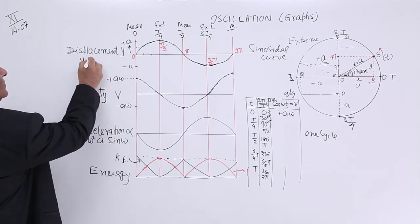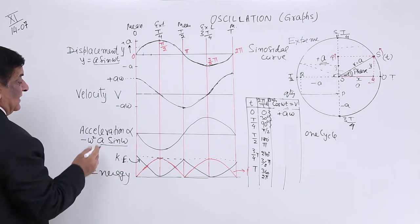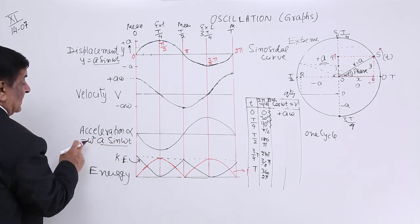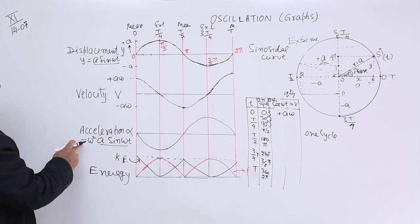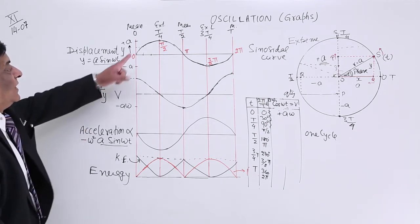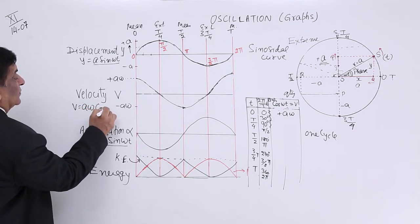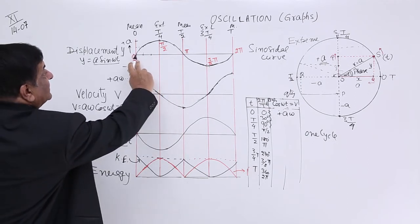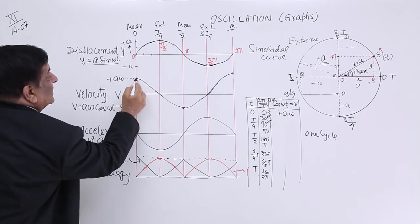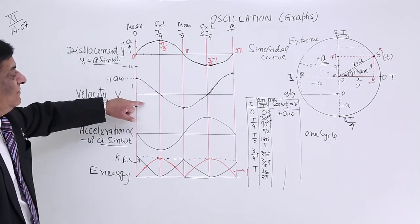Acceleration alpha equals minus omega square A sine omega t, while y equals A sine omega t. This is multiplied by omega square and the sign is negative. Negative means when t is changing, it is going to negative value first. So for the first, it goes negative; for displacement, it goes positive. This is velocity v equals A omega cos omega t. This is the cos graph. This is sine graph, this is cos graph. Sine starts from 0 and cos starts from full value 1. These are the graphs for displacement, velocity, and acceleration.